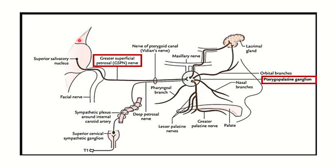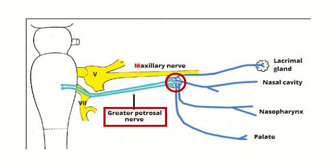Sometimes in a question, the pterygopalatine ganglion may be absent from the options. In that case, the greater petrosal nerve will be the answer. Here we can see the lacrimal gland, the greater petrosal nerve, and the pterygopalatine ganglion.